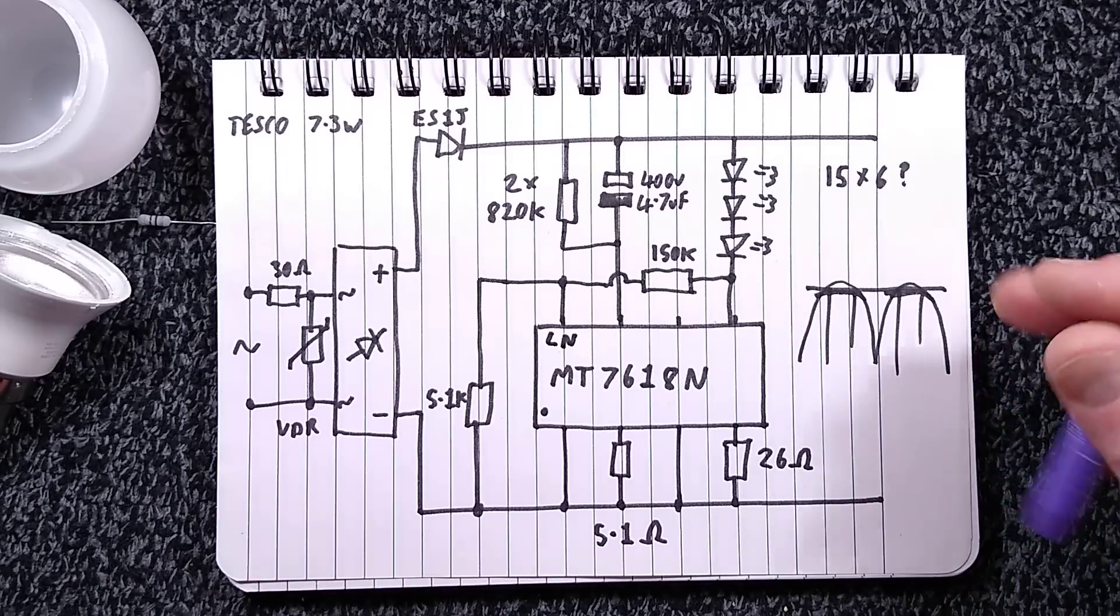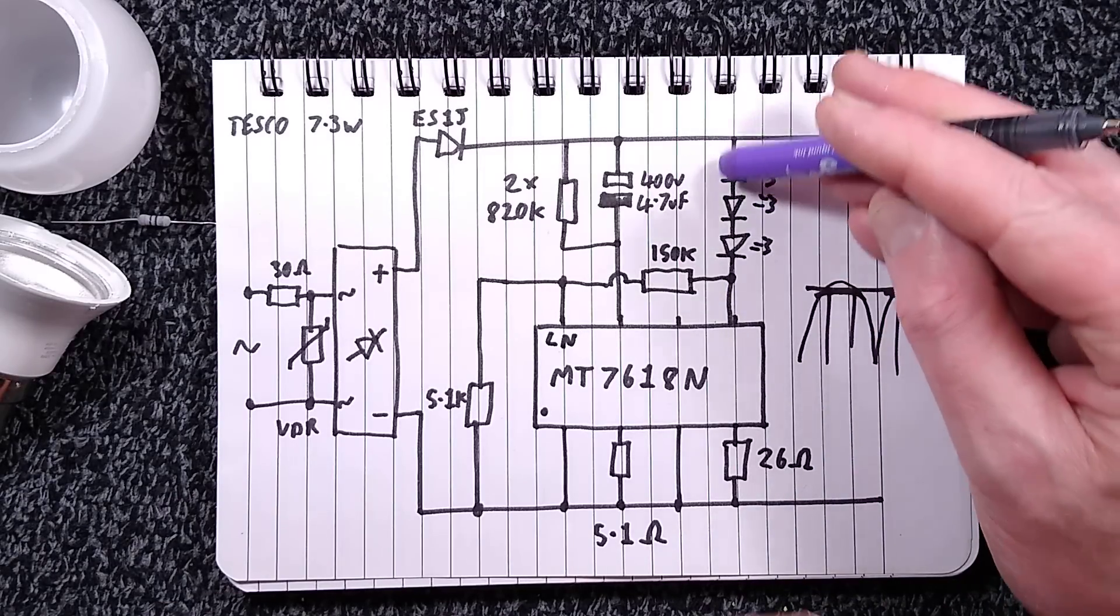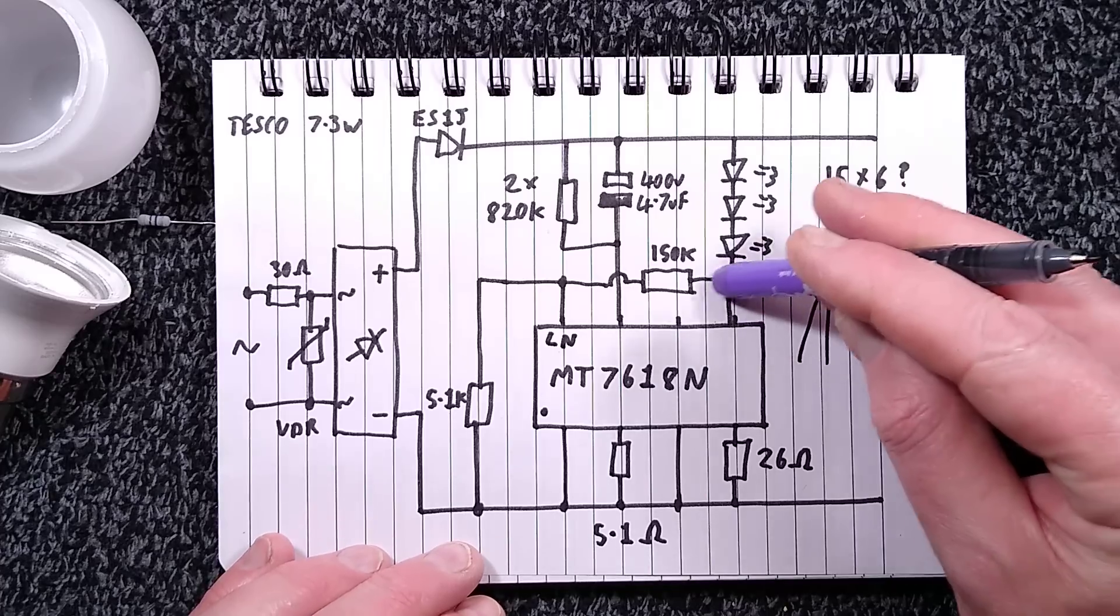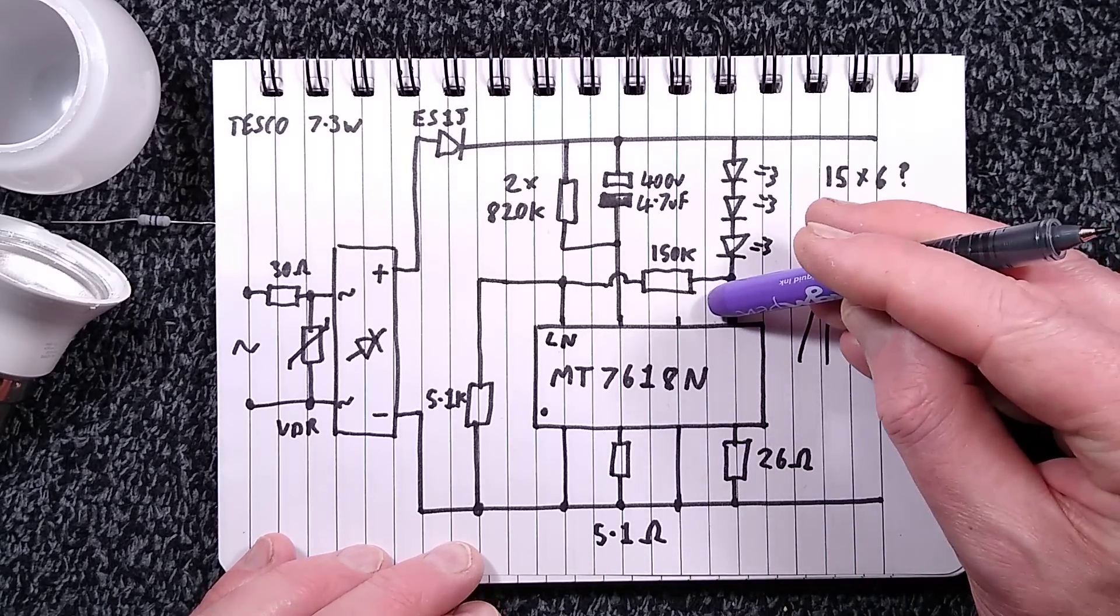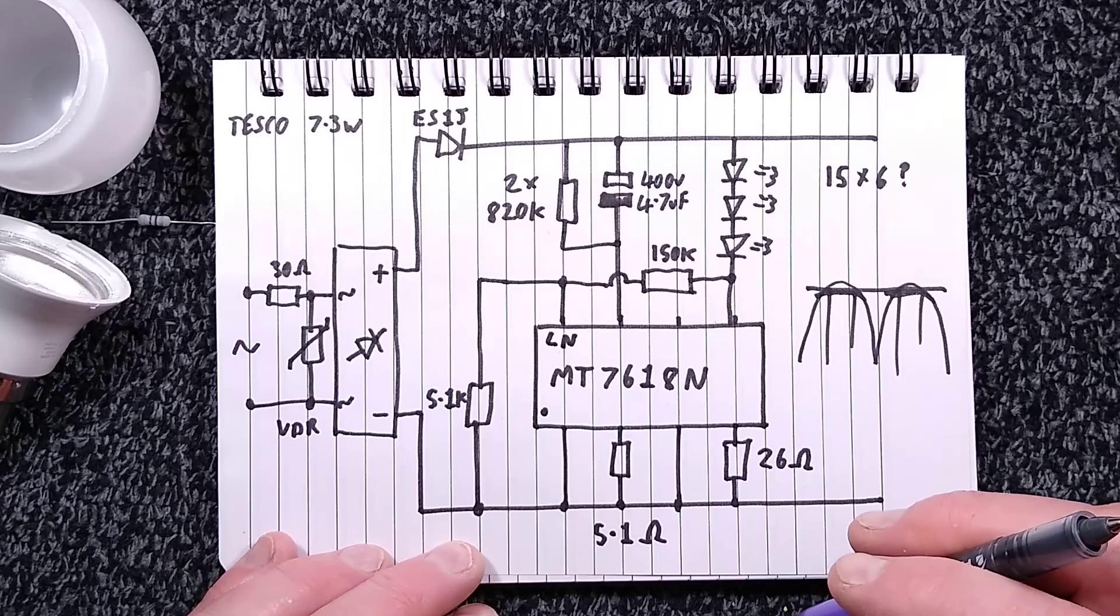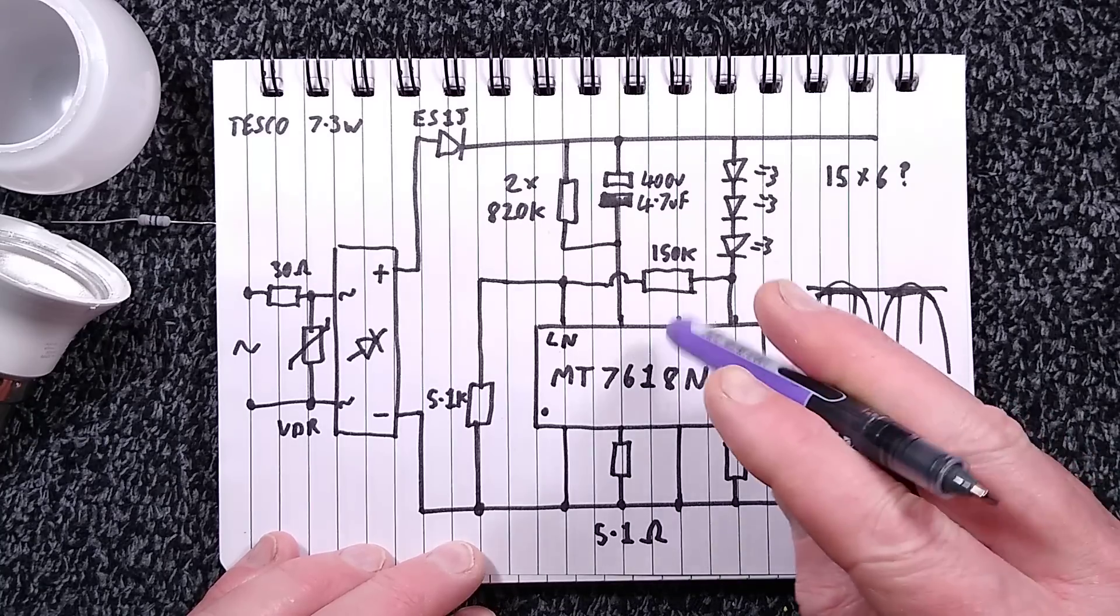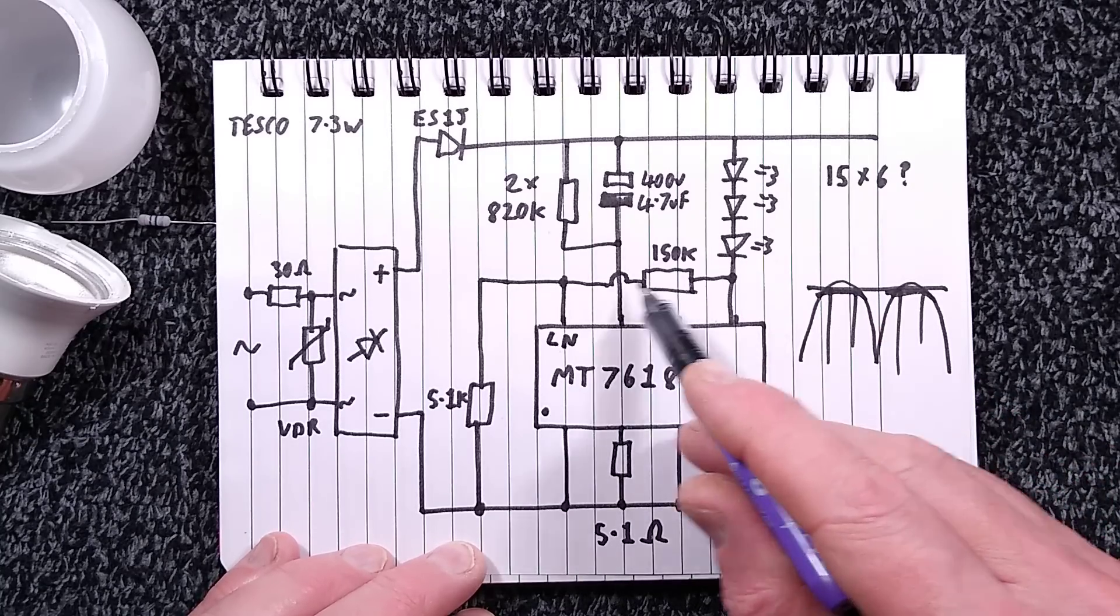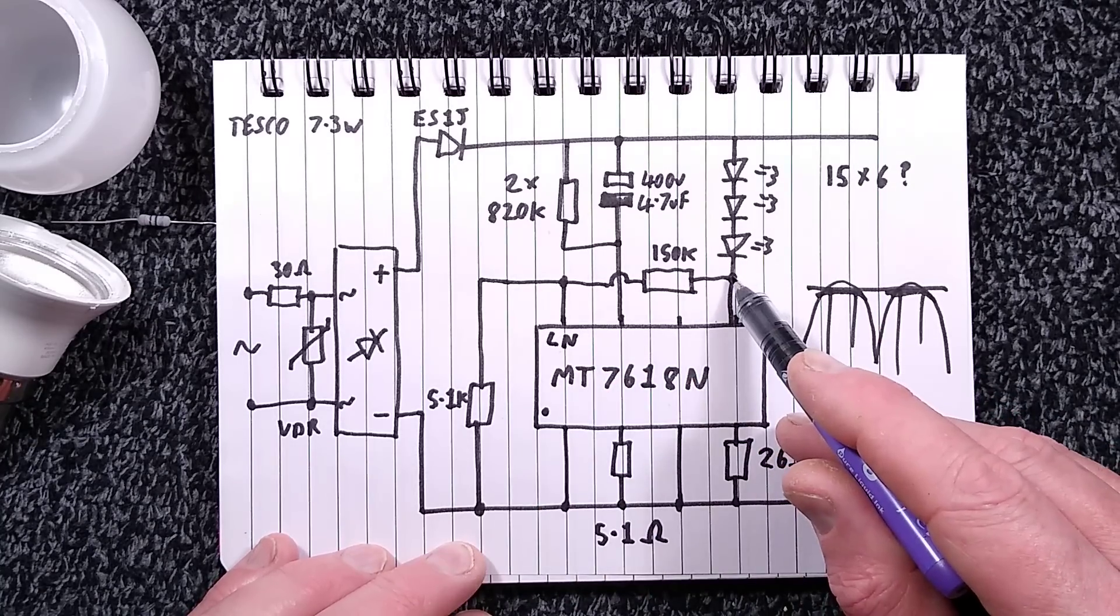All I can think is that maybe it's to detect if the LEDs have shorted out and the voltage across this is too high. I'm not sure. I thought that could have been sensed inside. I really don't know why they've got this resistive divider tapping off there.